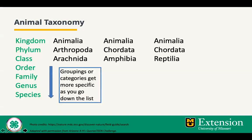First we're going to start with animal taxonomy. Referring back to the Missouri Mammal Zoom, animals are classified based on their characteristics at different levels. This system is called a taxonomy. There are several groupings or categories that we use to divide animals, and they get more specific as you go down the list. Today we're going to be talking about three classes of animals: Class Arachnida or the arachnids, Class Amphibia or the amphibians, and Class Reptilia or the reptiles.